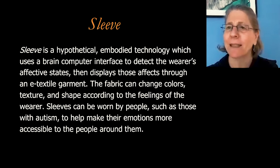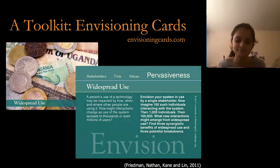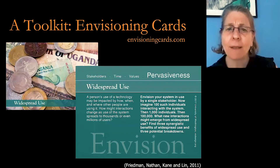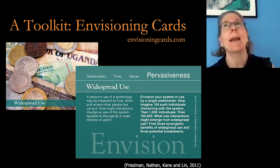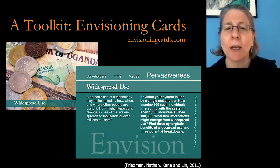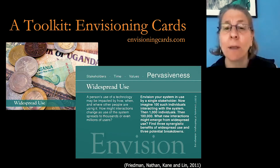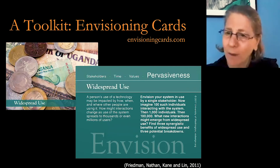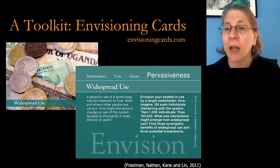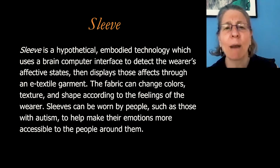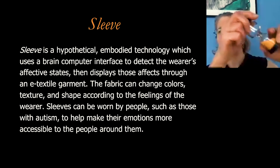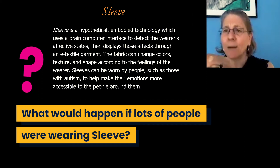Do you want to try one more card with Sleeve? Here's the next one — this is about widespread use, what happens if lots of people start using it. A person's use of a technology can be impacted by how, when, and where other people are using it. So it's not just me wearing Sleeve, but let's say everybody's wearing Sleeve. How might interactions change as use of the system spreads to thousands or even millions of people? Everybody in your neighborhood, all your family members — everybody you know has a Sleeve. Let's look at Sleeve again to remember what it's like, then take a few minutes and think about what would happen if lots of people were wearing Sleeve.